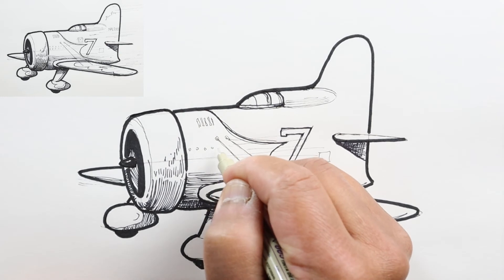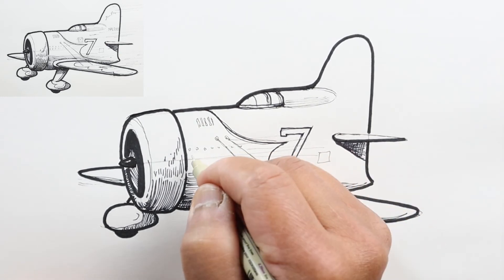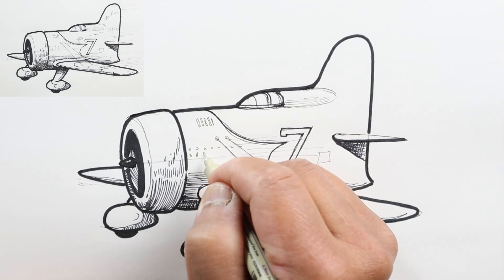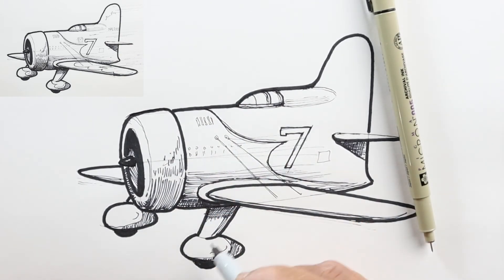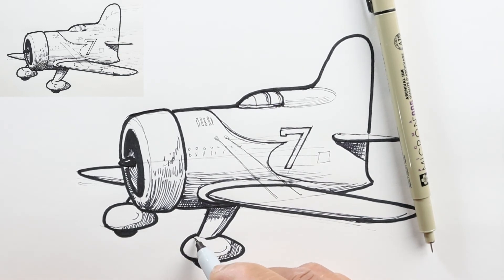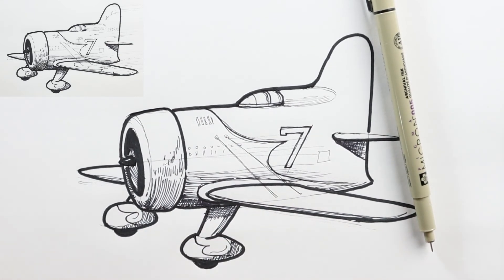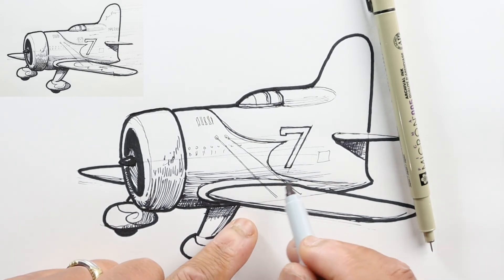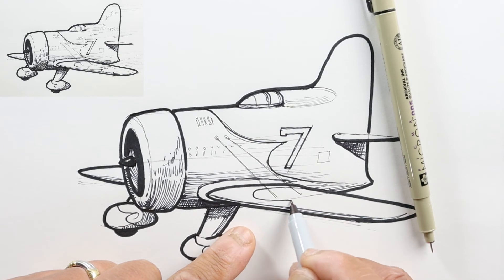We'll also add that same design down here on the landing gear and on the wing. It's just a scallop design here on the wing.